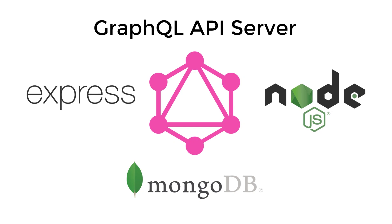Hello class, welcome to this mini-series where we build a GraphQL server that uses the backend technologies of the MERN stack — Node, Express, and Mongo — to expose an API that lets users register, login, create posts, and like and comment on those posts.